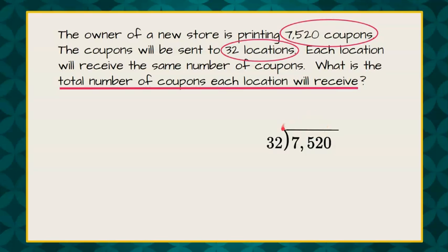Now we need to find our quotient, which will tell us the total number that each location will receive. To do that, we're going to ask ourselves: 32 — we'll start with our first digit. 32 does not go into 7, so this will be 0. We're going to leave that as an invisible 0. Now we need to determine how many times 32 will go into 75. And the answer is 2.